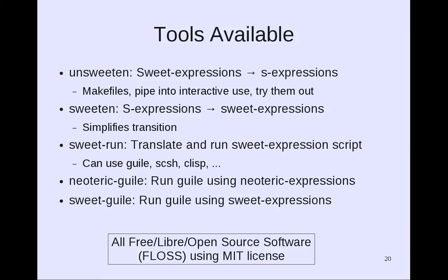We have a number of tools available. Unsweeten starts with Sweet Expressions and translates them to S-expressions — this can be used in makefiles like a compiler, or you can pipe it into a LISP implementation to use Sweet Expressions interactively, or simply to try them out. Sweeten goes the other way: it starts with S-expressions and translates them to Sweet Expressions, simplifying a transition. SweetRun translates and runs Sweet Expression scripts, meaning you can use Guile, SCSH, CLisp, and so on directly using Sweet Expressions. Neoteric-Guile runs Guile using Neoteric Expressions, and SweetGuile runs Guile using Sweet Expressions. All of these tools are free/libre open source software (FLOSS), available under the MIT license.